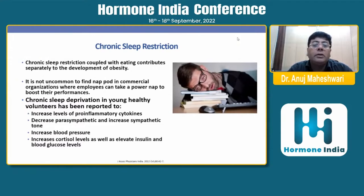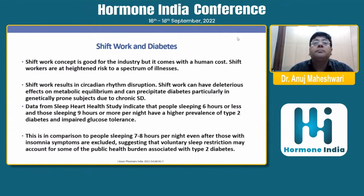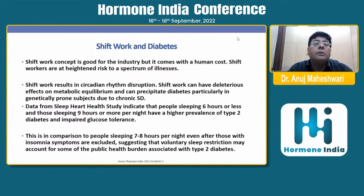Chronic sleep deprivation in young healthy volunteers has been reported to increase the level of pro-inflammatory cytokines, decrease parasympathetic tone and increase sympathetic tone. It increases blood pressure, cortisol levels, as well as elevating insulin and blood glucose levels. For all these reasons, shift workers always remain at higher risk. Although shift work is good for industry, it comes at a human cost, placing shift workers at high risk for a spectrum of illness.